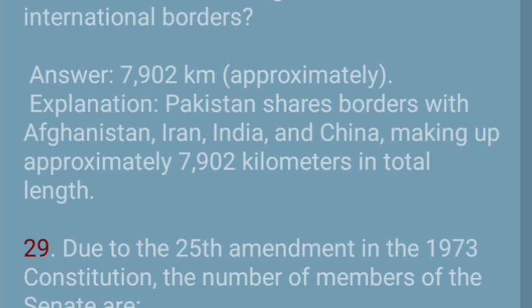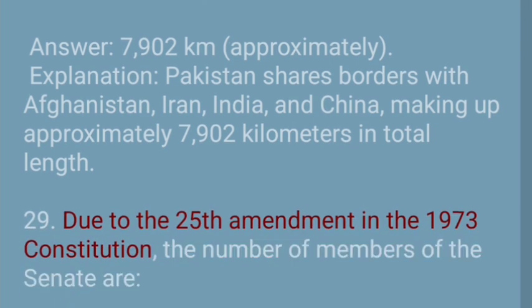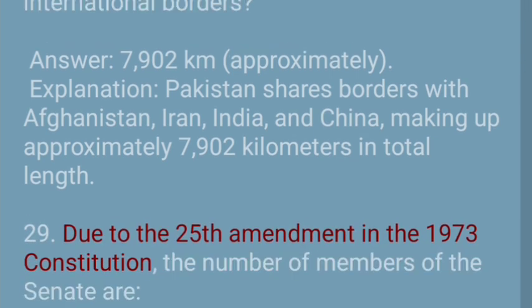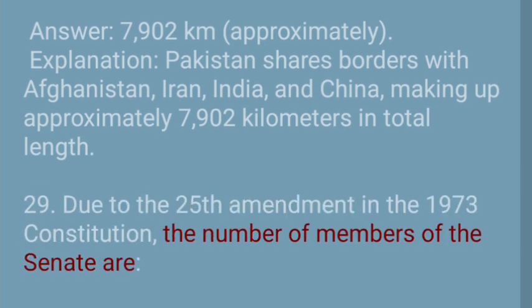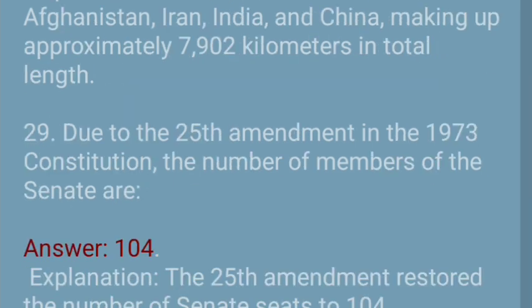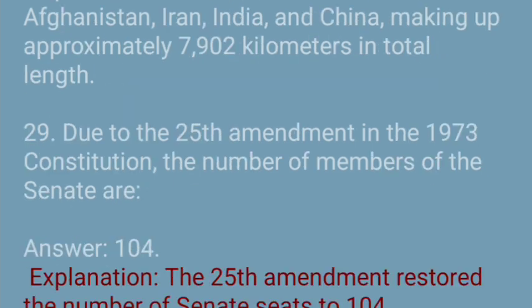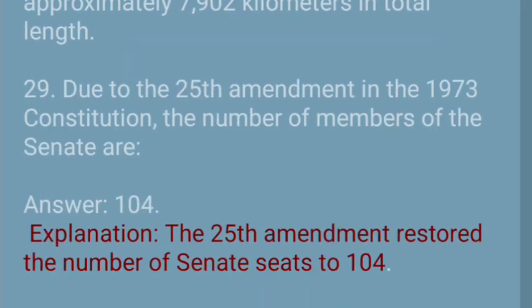Question 29: Due to the 25th Amendment in the 1973 Constitution, the number of members of the Senate are — Answer: 104. Explanation: The 25th Amendment restored the number of Senate seats to 104.